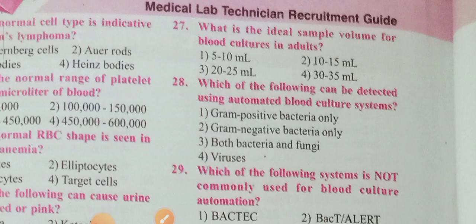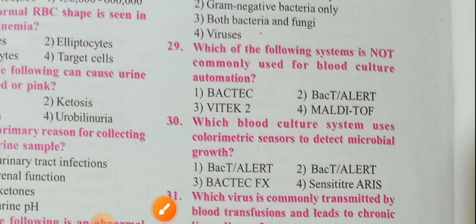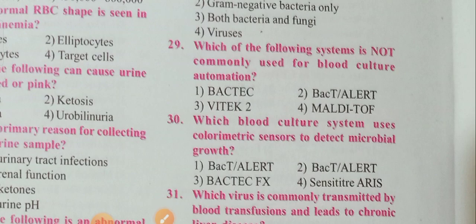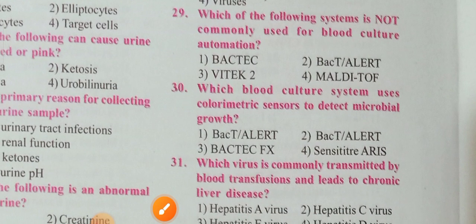Question 27: What is the ideal sample volume for blood cultures in adults? Option 2 — 10 to 15 mL. Question 28: Which of the following can be detected using automated blood culture systems? Option 3 — both gram bacteria and fungal. Question 29: Which system is not commonly used for blood culture automation? Option 4 is correct. Question 30: Which blood culture system uses colorimetric sensors to detect microbial growth? Option 1 — BacT/Alert.